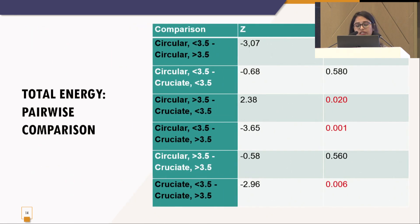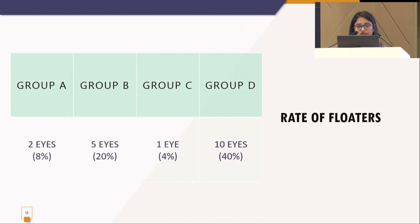In total energy pairwise comparison, we also found a significant difference between circular shape with less than 3.5 mm and cruciate more than 3.5 mm. Rate of floaters was the highest in Group D, which was cruciate-shaped capsulotomy with more than 3.5 mm.